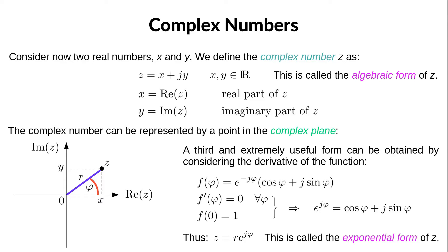We can also express z in a third form that is extremely useful. Consider the function f defined as e to the j phi times cosine phi plus j sine phi. The derivative, obtained by using the product rule, is zero for any value of phi, meaning this function is constant. Since it equals 1 when phi equals 0, we conclude that e to the j phi equals cosine phi plus j sine phi. This gives us the exponential form of z: z equals r times e to the j phi.